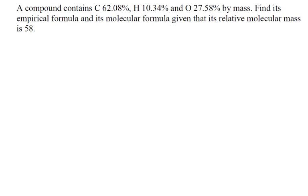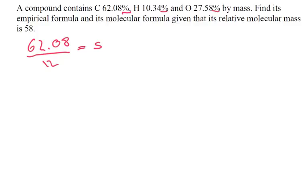Firstly, what we're going to do is pretend that these percents are really grams. We're going to work out how many moles we have of each element — hydrogen, carbon, and oxygen. So we've got 62.08 divided by 12, and we get 5.173 for carbon.